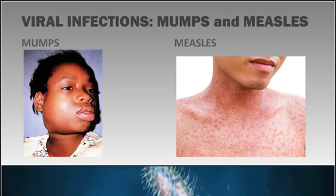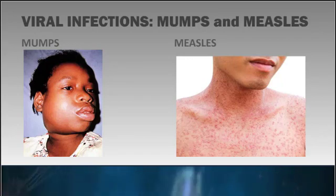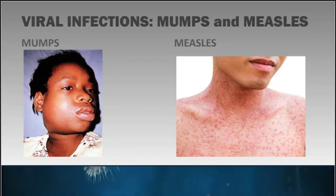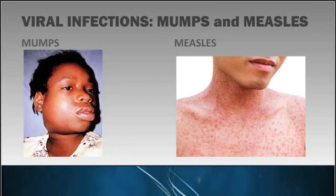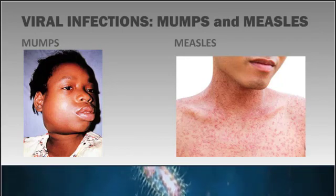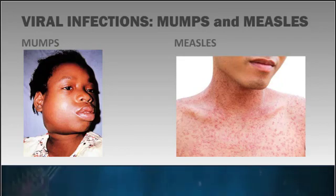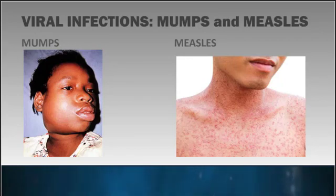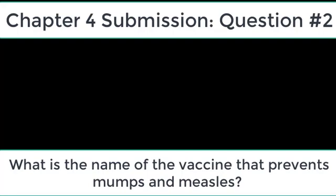Thankfully we don't have to cover much about mumps and measles because we rarely see them. However, because of the anti-vax movement, we are seeing a comeback of these diseases. They are both caused by the paramyxovirus and are highly contagious, spread through saliva, sharing utensils, or close contact with an infected individual. Mumps is a viral infection of the salivary glands, particularly the parotid glands, while measles causes more symptomatic systemic symptoms.